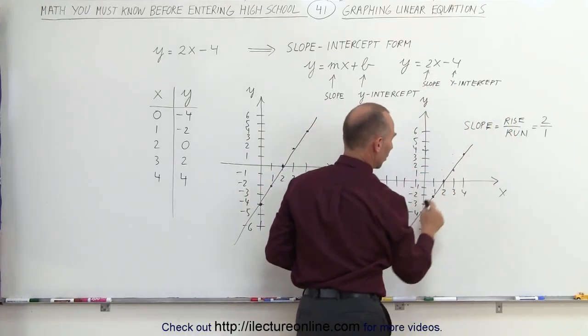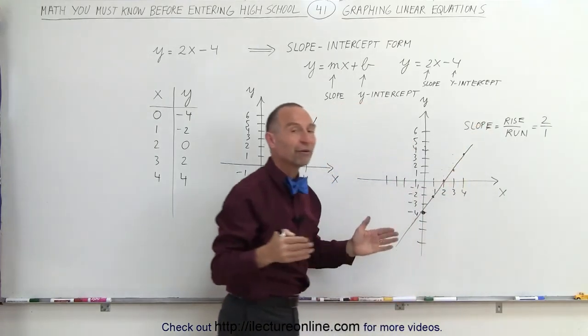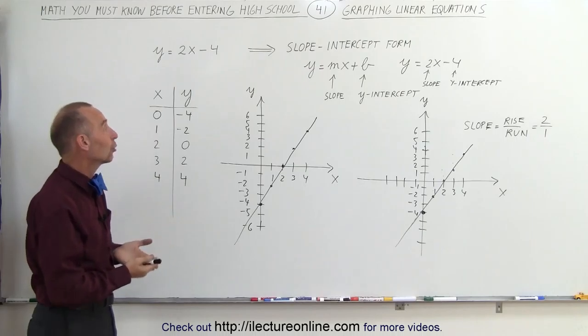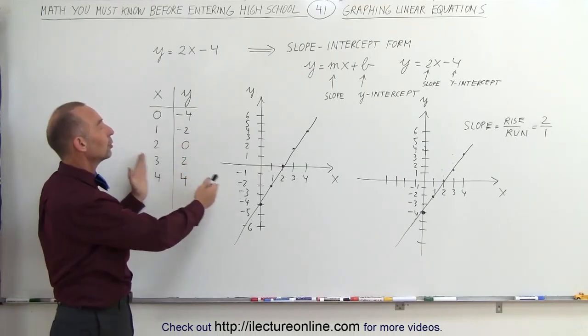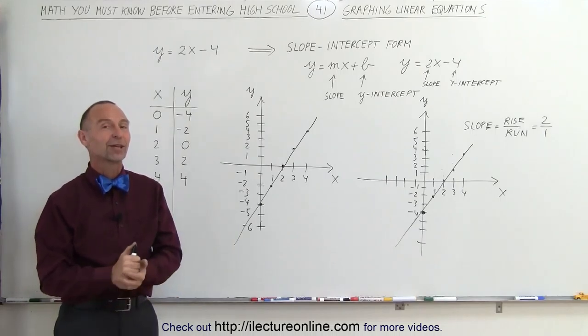Here it's at negative 4. Then use the slope, the definition, rise over run. Go up 2 units, over 1, over 1, connect those dots and you have the very same line. And that's what we mean by graphing linear equations, either using a table of values or using the slope-intercept form. And that's how it's done.